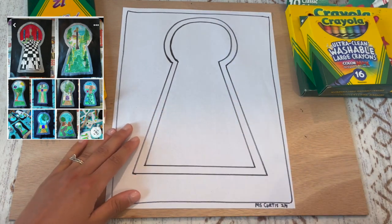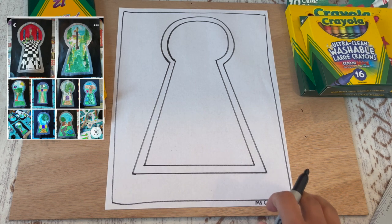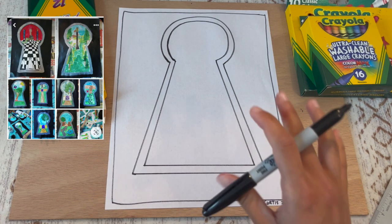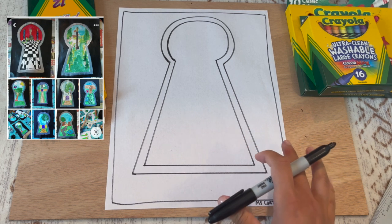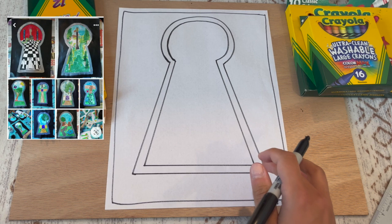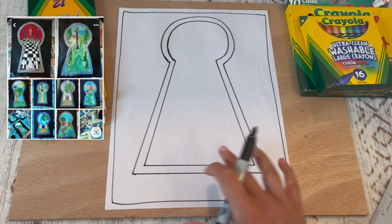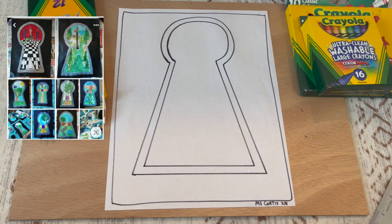All right, so there is the keyhole. So now I'm going to ask for you to think about what kind of really cool world would be on the other side of this. So I'm going to start to draw my own world and then I'm going to color it in, and I can't wait to see what you draw.